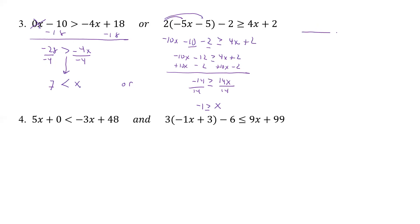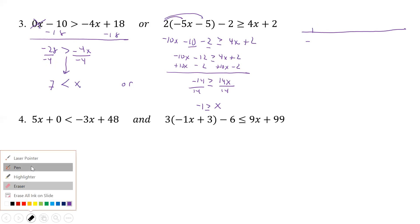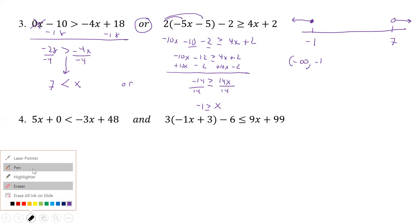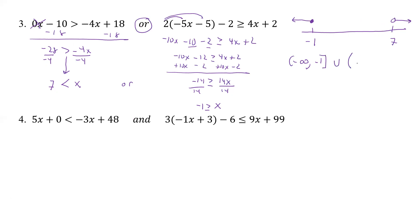All right, so we'll draw what we have. Here's our negative 1, and here is our 7. So x is greater than 7 — it's an open circle to the right. Here we have x is less than or equal to negative 1 — so it's a closed circle to the left. And now it's an 'or'. So we're going to include all of it, going from negative infinity to negative 1 with a bracket — because that one has a closed circle — union, then open parenthesis 7 to positive infinity.